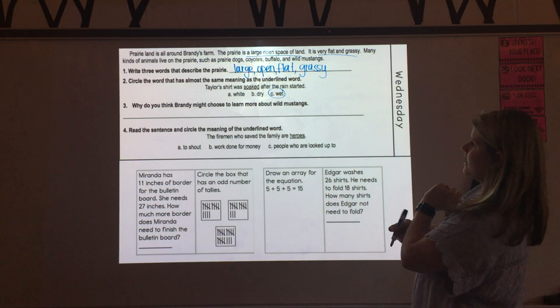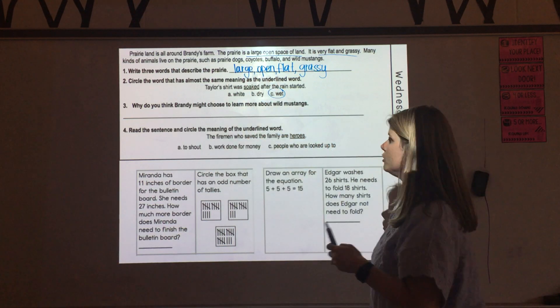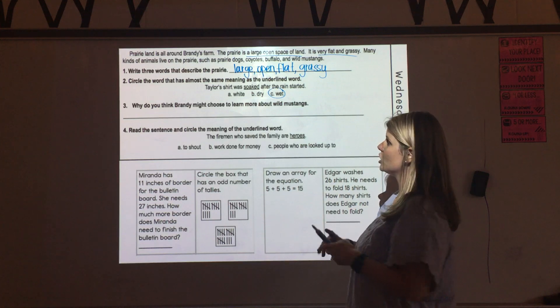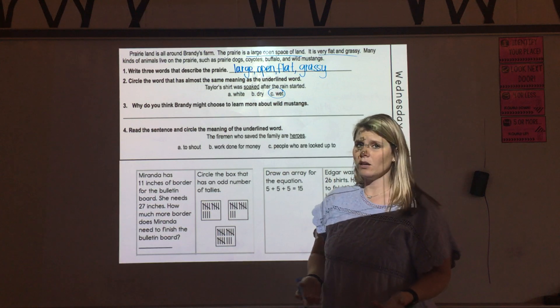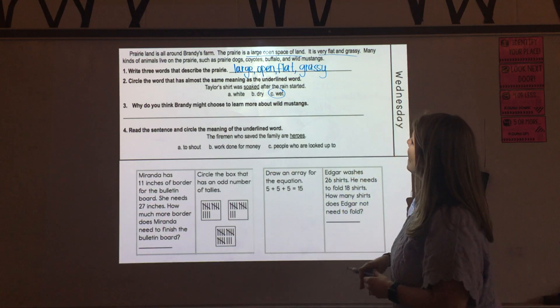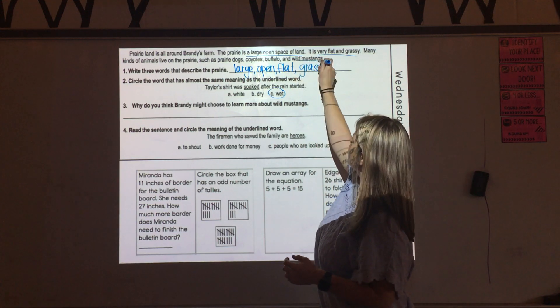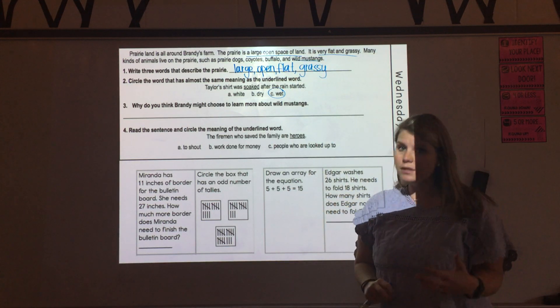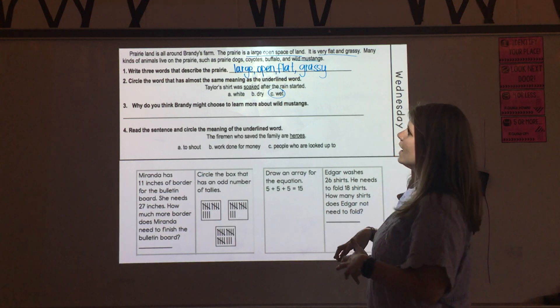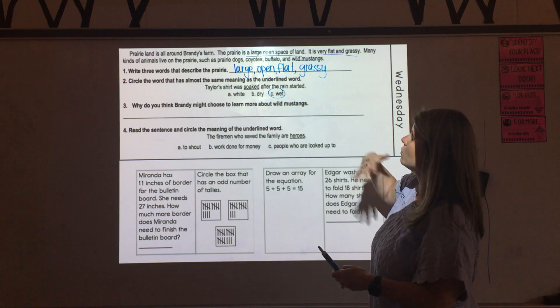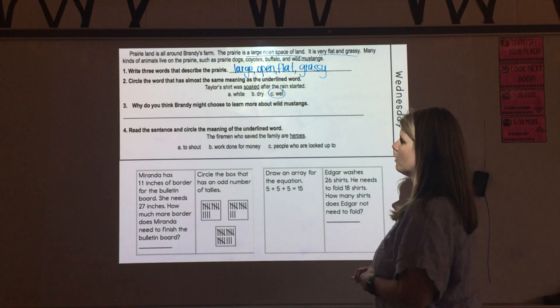Then number three is asking us why we think Brandy, who is the main character in our story for this week, might choose to learn more about wild mustangs. I think you could have put anything on this line along the lines of because it's one of the animals that live there because we see wild mustangs on here. She's new to this state of Nebraska. She doesn't know a lot about them. Maybe she wants to learn more about them because they're animals that live where she lives now. Anything along those lines is perfect.